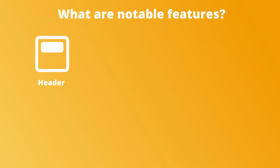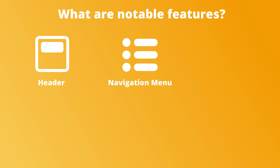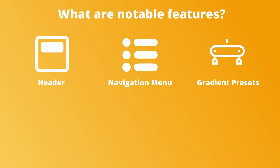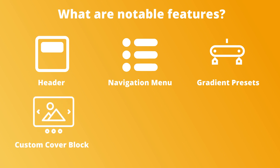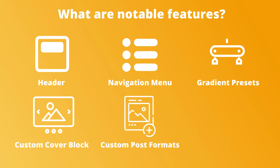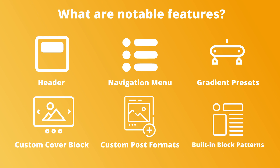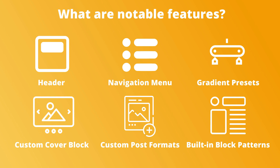Custom header logos and elements such as a header with title or with a title and button. Two navigation menus — one in the header and one in the footer. Gradient presets for styling your blocks. A custom cover block which allows you to have text over image, making it easy to visually separate different sections of your post. Multiple custom post formats that include galleries, links, quotes, and even chats. Built-in block patterns, which are pre-made block layouts you can use to quickly build your page.